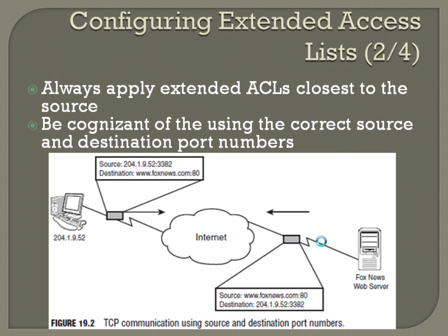Be cognizant of using the correct source and destination port numbers. For instance, this computer wants to access a web page — foxnews.com. It sends out a packet across the internet with a destination port 80, which is the standard HTTP web browsing port number. On the source address it's got its IP address 204.1.9.52, and then it's got this random port number of 3382.